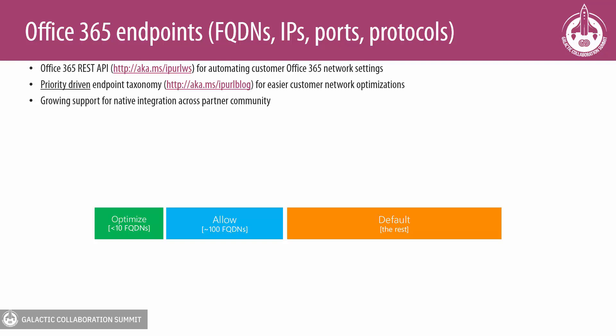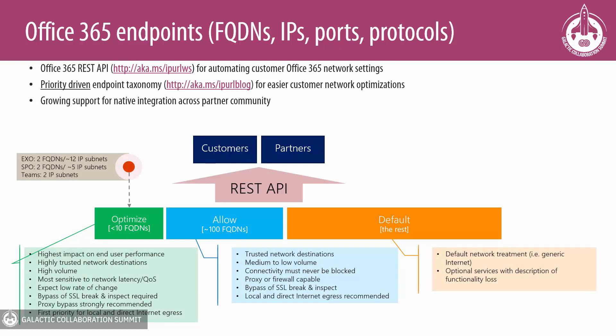We group these endpoints into three categories: optimize, allow, and default. The first category, optimize, is the most critical endpoints as part of Office 365 — most important that they have the least network intermediary devices and that connectivity is very simple and direct. They also represent the highest volume of Office 365 traffic, over 80%. So you're going to be bypassing your expensive security devices for a large amount of Office 365 traffic. They are also expected to have a low rate of change, so you can put these in a split tunnel configuration for a VPN.